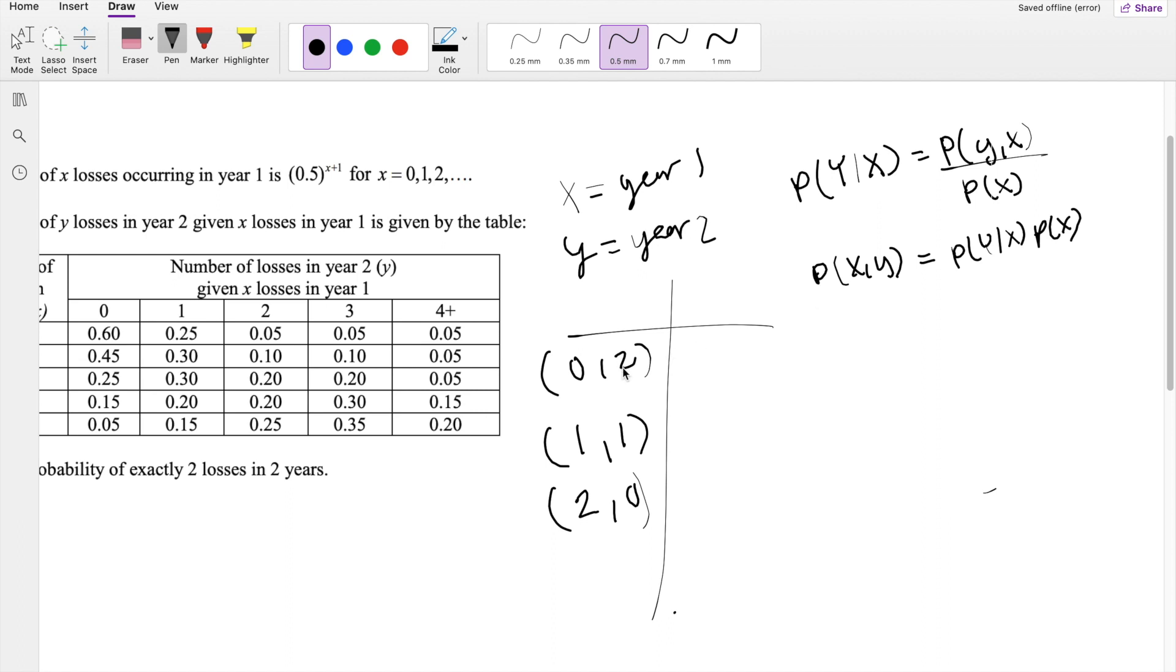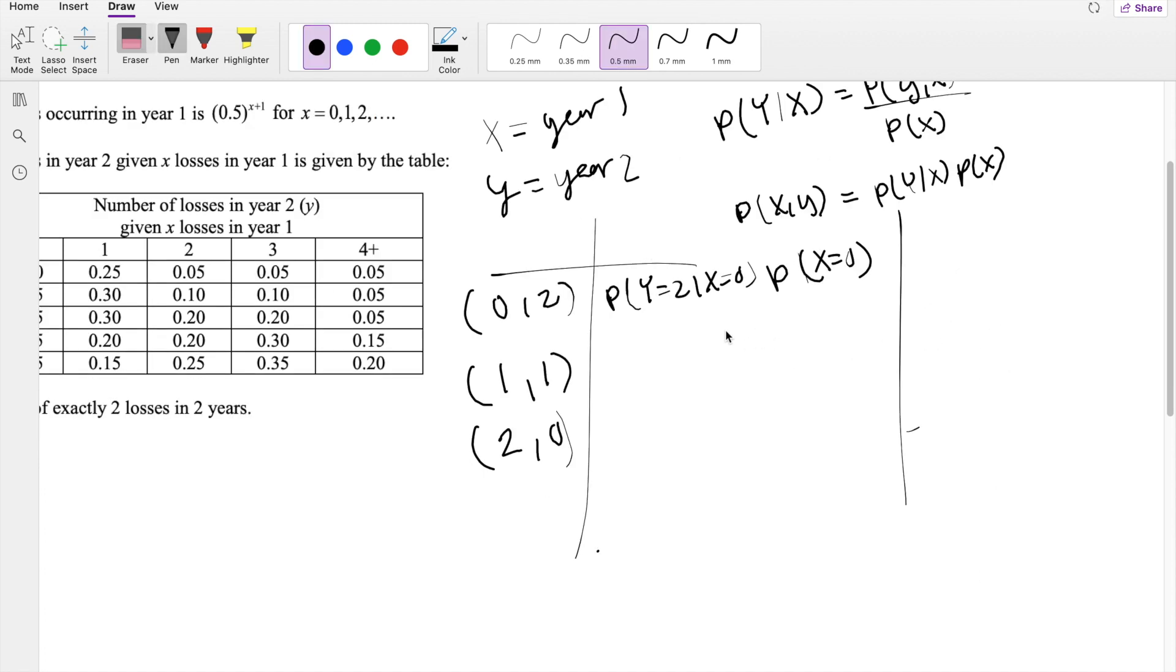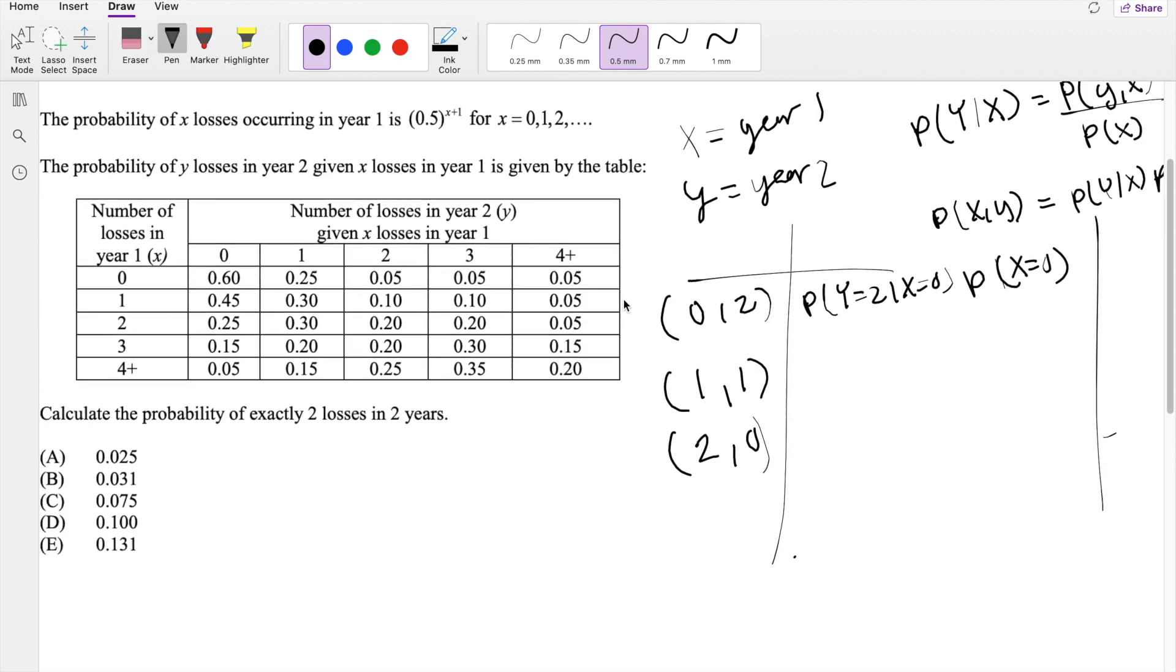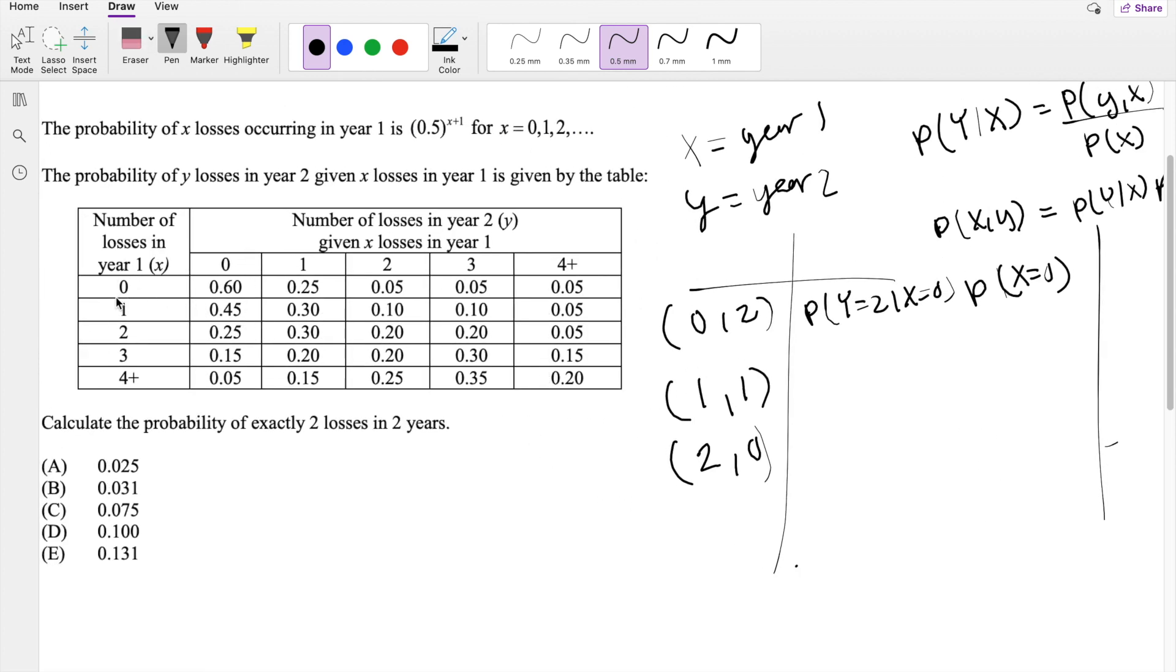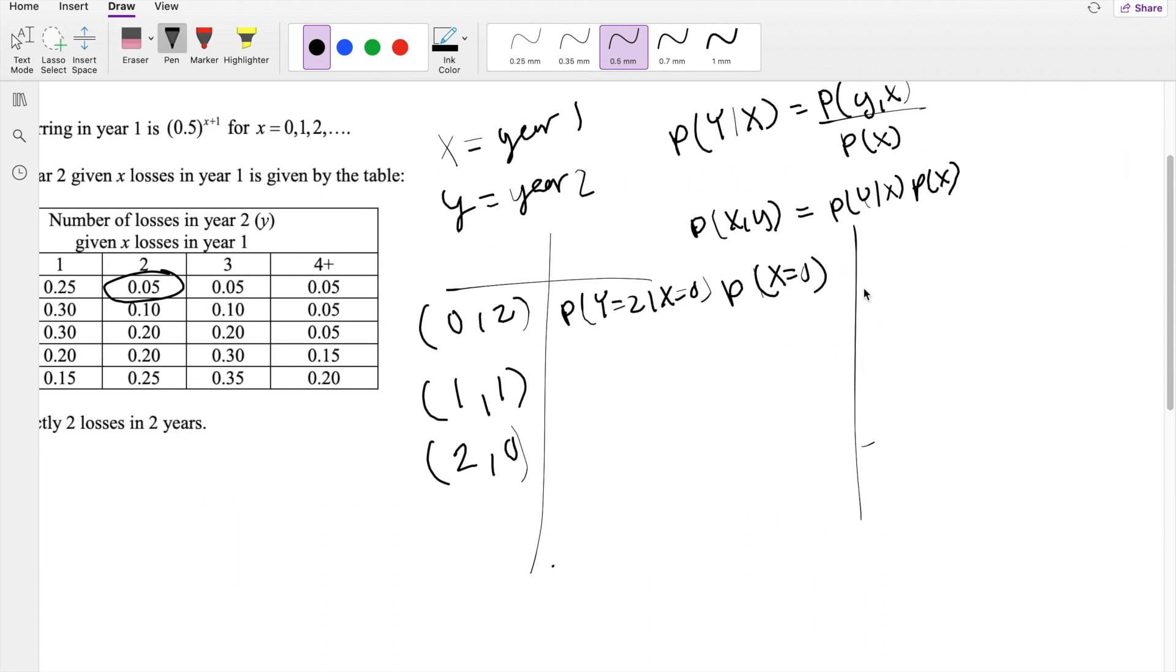If we're looking for the probability of Y equals 2 given X equals 0, we just have to multiply by the X equals 0 here. So given X equals 0, Y equals 2, that's this number right here, 0.05, times the probability of X equals 0. I just have to plug in 0 for this one here. So it's going to be 0.50 plus 1.